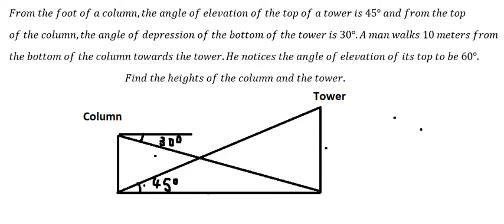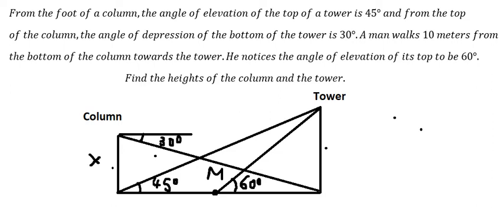A man walks away from the column — I will put the man here. The angle of elevation from the man to the tower is about 60 degrees. Now we need to find the height of the column and the tower.